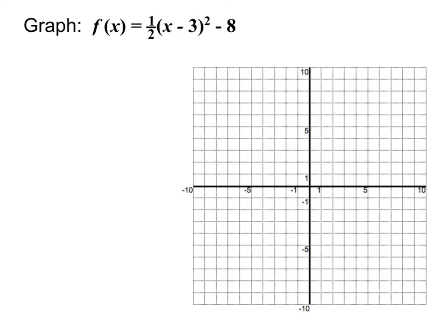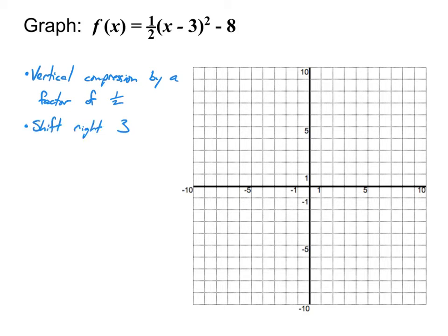Now we introduce the idea of vertical compression into polynomial graphing — we've only dealt with it for absolute value so far. Let's write out all the transformations: the one half is a vertical compression by a factor of one half, meaning we go up half as far as normal. Then there's a shift right from the minus 3, and a shift down from the minus 8. Because it's squared, the parent function is a parabola — compressed vertically, shifted right, and shifted down.